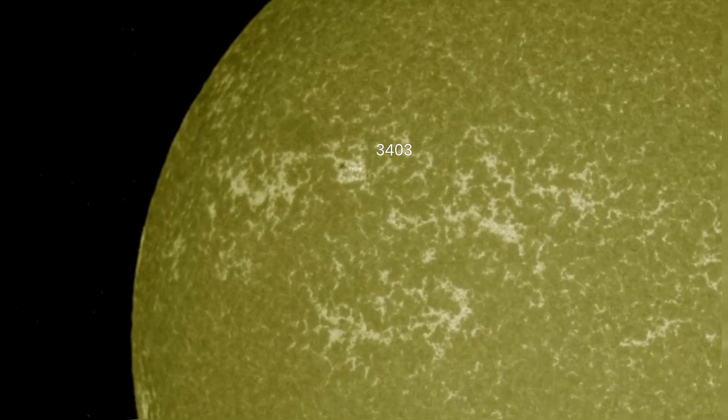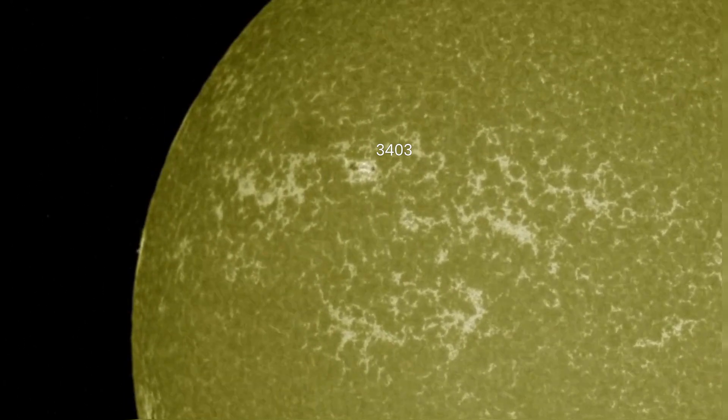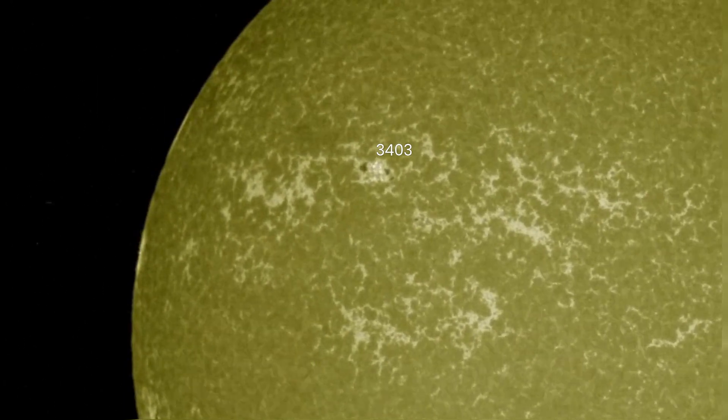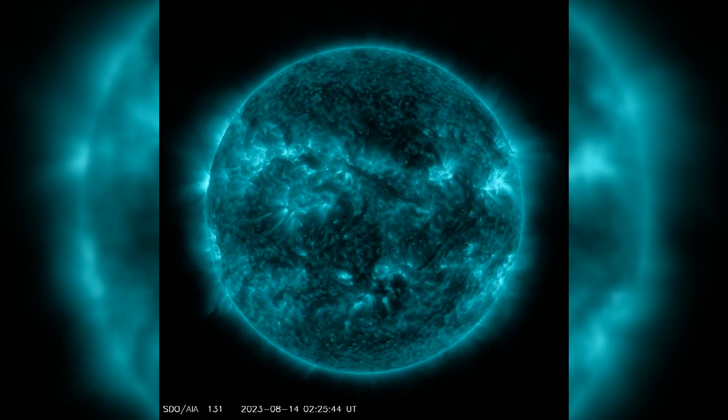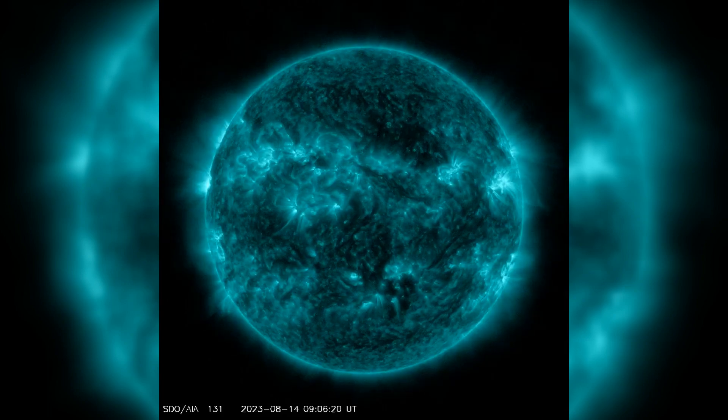Region 3403 exhibited noteworthy changes, with alterations in both its leader and trailer spots leading to an increase in its overall area. The majority of other solar regions have displayed stability or gradual decay.